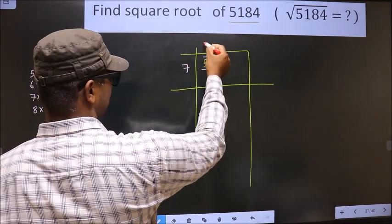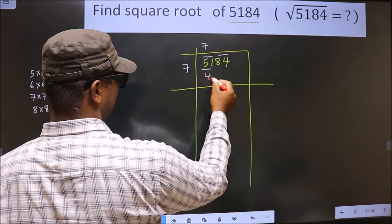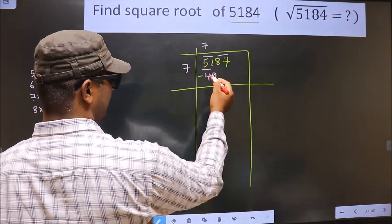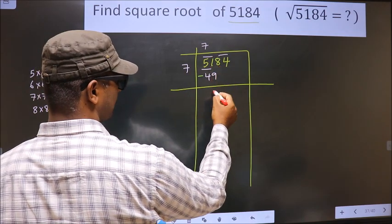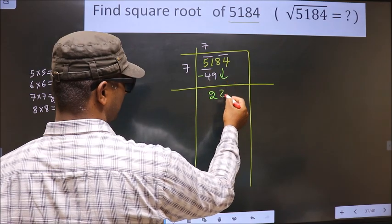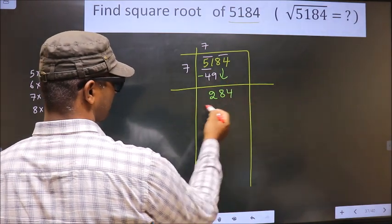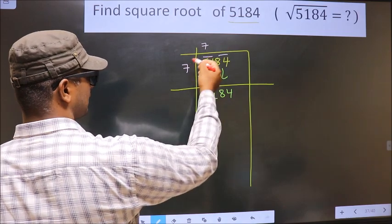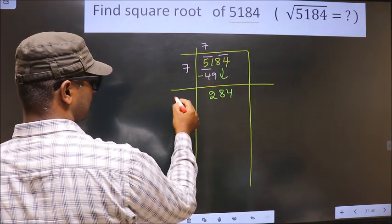We take 7. 7s 49. Now, you subtract: 51 minus 49 is 2. Now, you take down this pair. It will become 284. Now, here we should add these two numbers. That is 7 plus 7 equals 14.